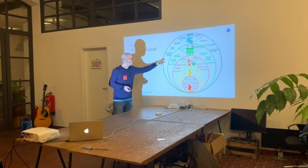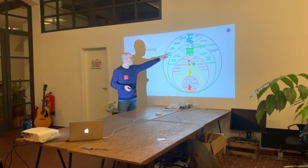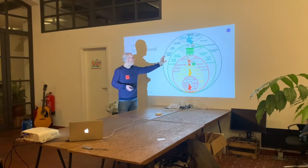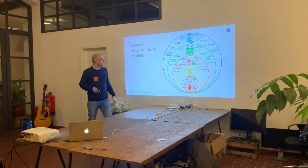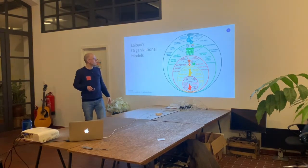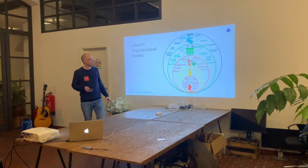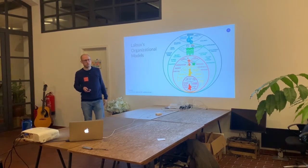Laloux color-coded the model — these are the green, orange, red, and amber organizations. They evolved even further to companies like Patagonia that have a higher purpose, distributed decision-making, and rely on self-management. It basically shows how you organize collaboration. My current boss at Schule im Aufbruch is actually mentioned in the book as one of the teal organizations, for the school she ran prior to her current work.